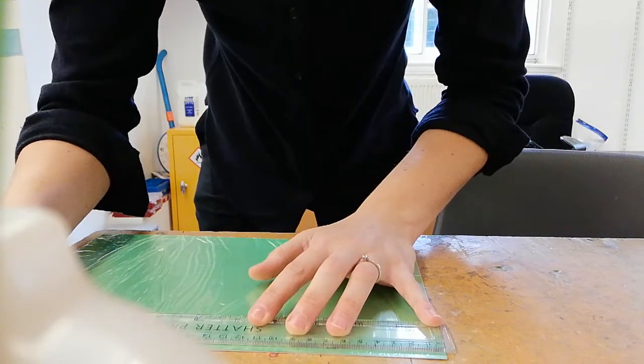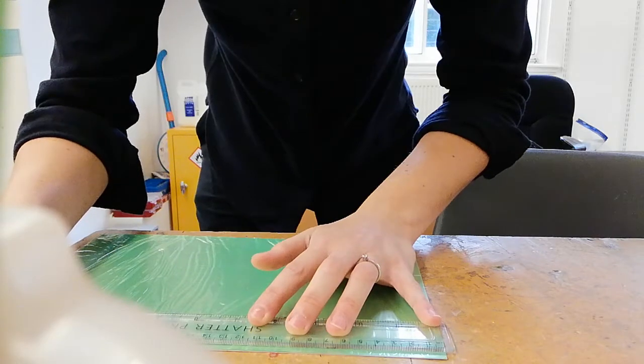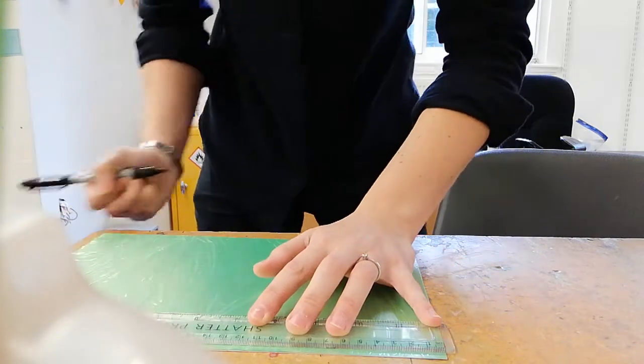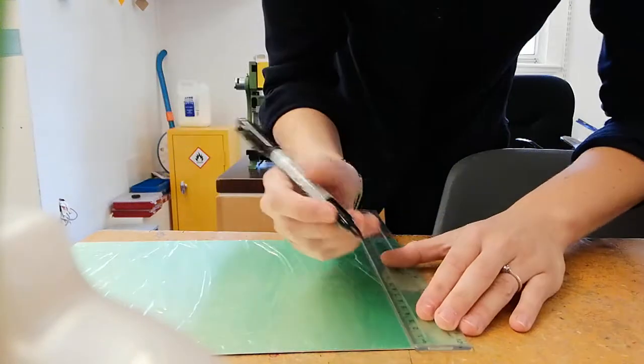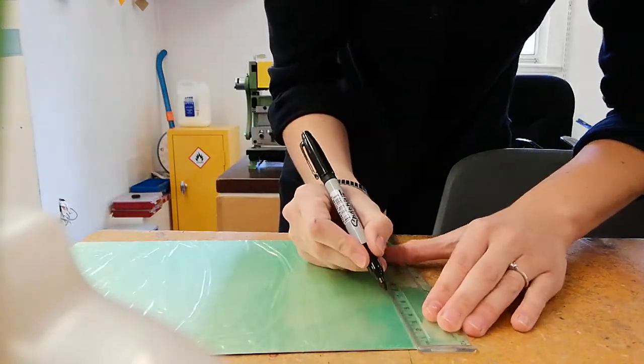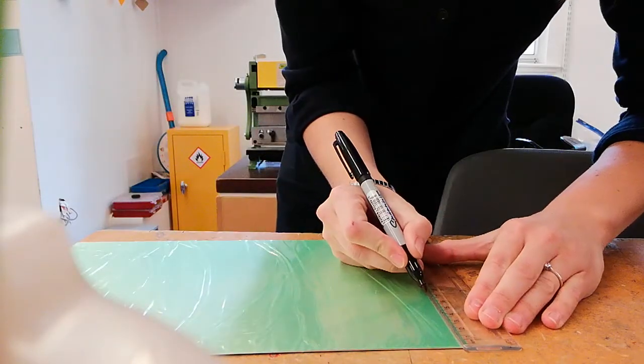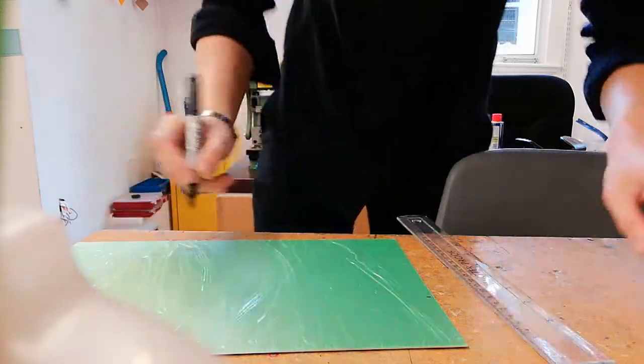So I need 220mm and I'm going to mark there, 22cm, and I need 70mm, so I'm going to mark here at the top 70mm and I'm just going to leave a line as close as possible to the edge.